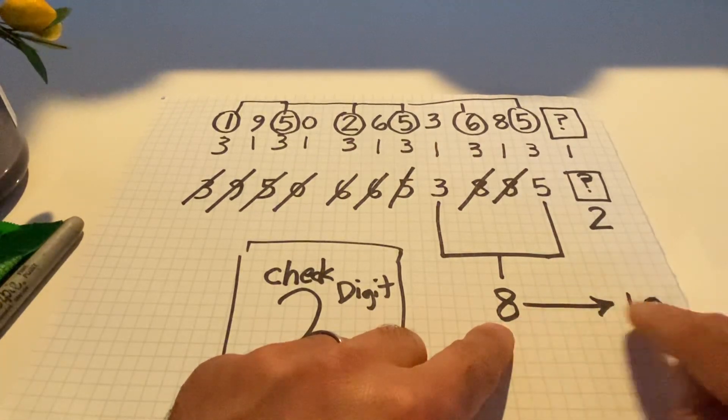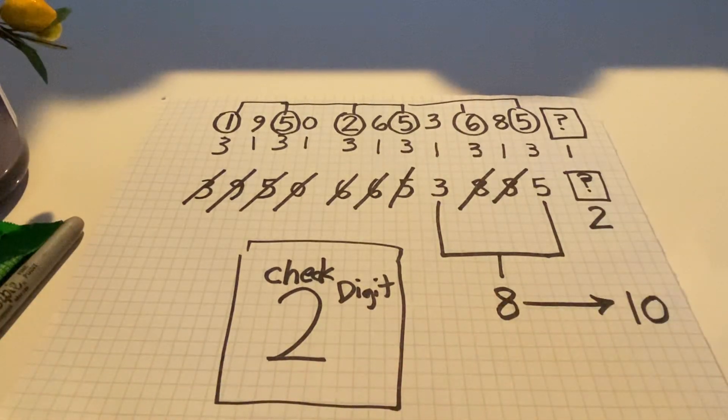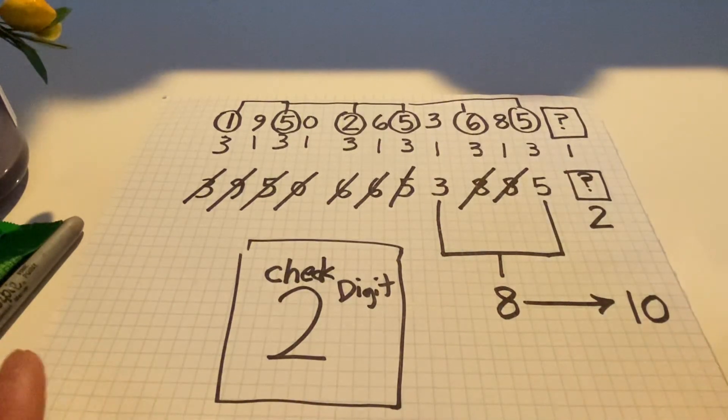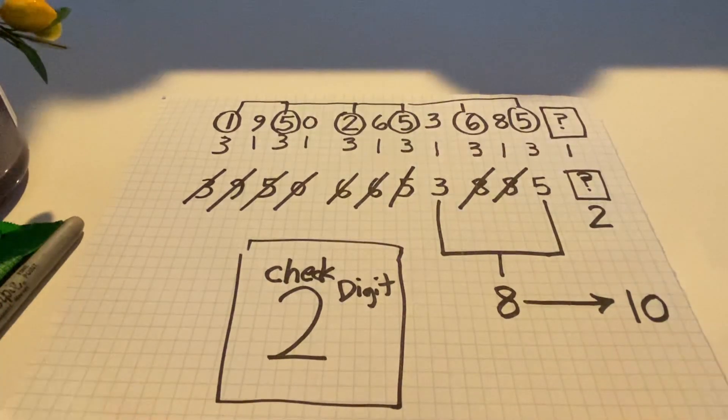We ask ourselves how much more to get to the next multiple of 10. In this case it was from 8 to 10, so that's 2. The check digit was 2. I don't want to make the video too long. Got the best students in the world. Check digit, beautiful math activity, and look forward to doing more of this in class. Love you. Bye.